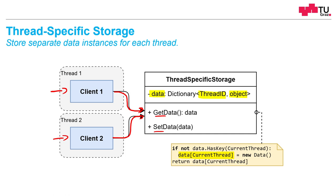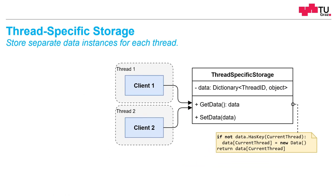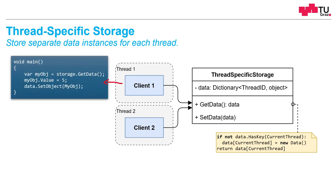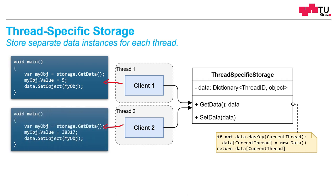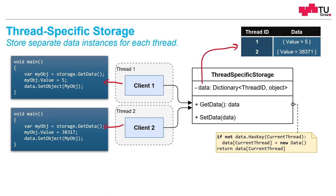As an example, imagine that Thread 1 sets the object value to 5 and Thread 2 sets the object value to 317. In the background, the data dictionary would look like this: for Thread ID 1 the value is 5, and for Thread ID 2 we have a different value. Every time Thread 1 and Thread 2 access their object instance, they will each get their own correct instance.